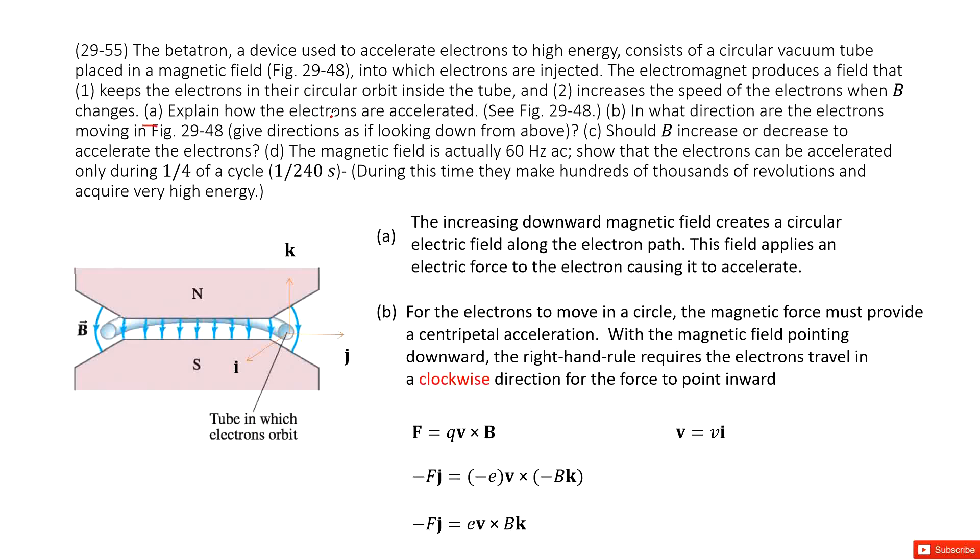We can see the magnetic field is pointing down. If we increase the magnetic field, the magnetic flux in the circle around this tube will change. The change in magnetic flux will produce the electric field and charges. This electric field will act as a force on electrons to make them accelerate.